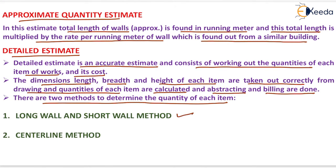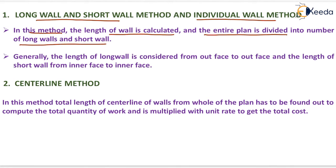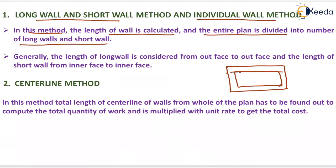The long wall and short wall method, also known as the individual wall method, divides the entire plan into a number of long walls and short walls. Generally, the length of the long wall is taken from out-face to out-face, and the length of the short wall is taken from inner face to inner face.